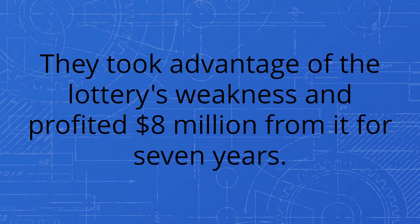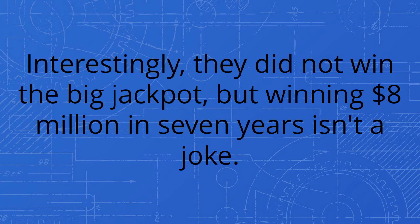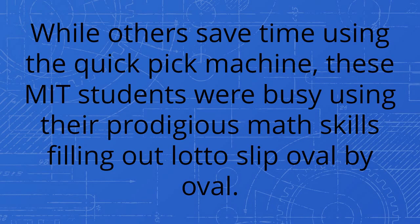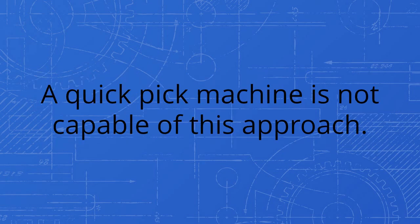They took advantage of the lottery's weakness and profited 8 million dollars from it for seven years. The majority of these students majored in mathematics. Interestingly, they did not win the big jackpot, but winning 8 million dollars in seven years isn't a joke. They know better than anyone else. How did they do it? While others save time using the quick pick machine, these MIT students were busy using their prodigious math skills filling out lotto slip oval by oval. By generating their numbers, they knew they could produce a broader range of covering a quick pick machine is not capable of this approach.